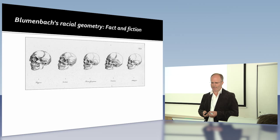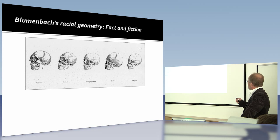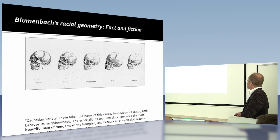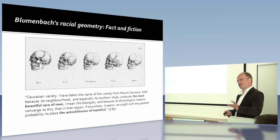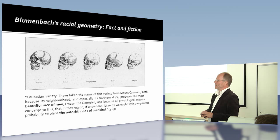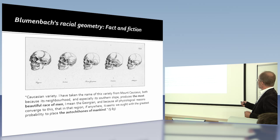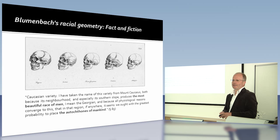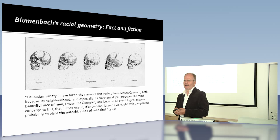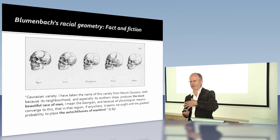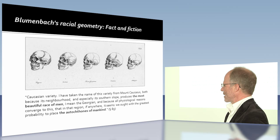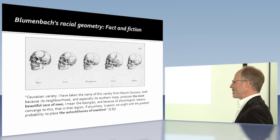But, in the course of describing the different varieties in the last part of his book, he comes up with the point that the Caucasian variety from the Mount Caucasus produces the most beautiful race of man. I came up with this idea: the term 'most beautiful' actually implies to me that the others are beautiful as well, and one is just more beautiful — not that the others must be necessarily ugly. Otherwise he would have said 'the only beautiful race of man.'